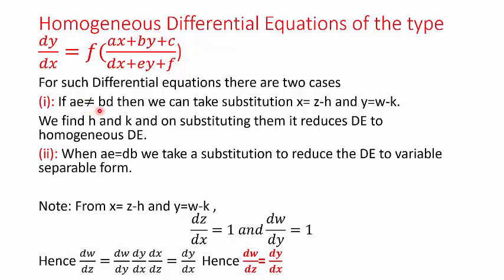For differential equations of the type dy/dx = (ax + by + c)/(dx + ey + f), there are two cases. For the first case where ae ≠ bd, we take the substitution x = z − h and y = w − k. We find the values of h and k, substitute them in the differential equation, and that reduces it to a homogeneous differential equation. For the second case where ae = bd, we take a substitution such that the equation can be solved using the method of variable separable.